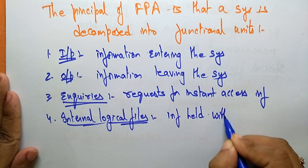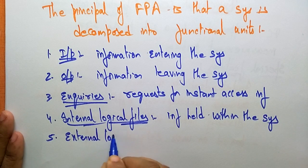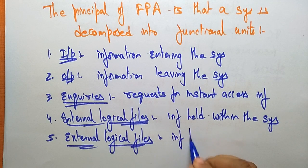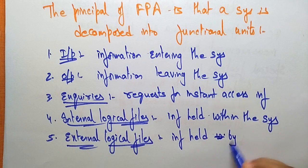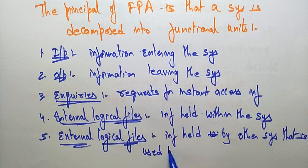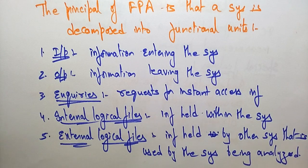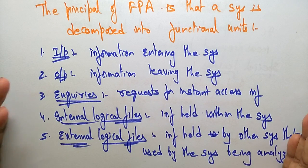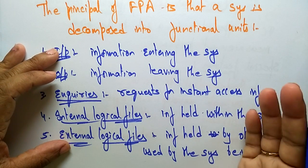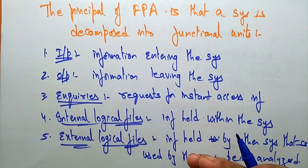The fifth functional unit is External Logical Files — information held by other systems that is used by the system being analyzed. So these are the five functional units a system is decomposed into. This is the main principle of functional point analysis. To calculate FPA, you divide the system into five functional units: input, output, inquiries, internal logic, and external logic.